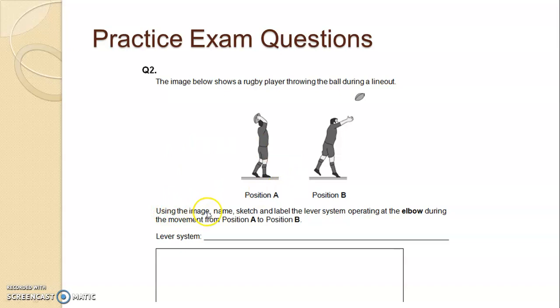So using the image name, it's asking us here to name, sketch, and label the lever system. So it's asking us to draw the actual lever. We're not going to actually draw every part of this person's arm. We're not going to draw the fat tissue or anything like that. We're going to keep it nice and simple so we can show the examiner exactly what we're talking about here. Operating at the elbow, so it's even told you the fulcrum during the movement.